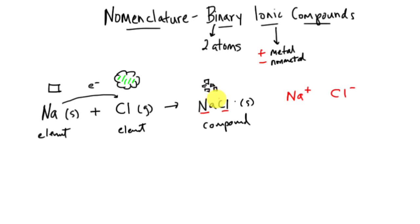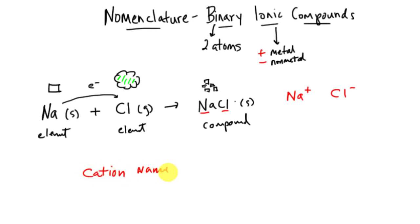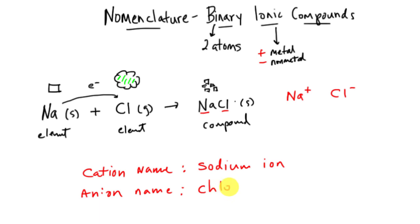Even though we don't write the charges, you have to keep in mind that whenever we have an ionic compound with a metal and a nonmetal, one is positive and one is negative. For the cation, we just call it what it is — sodium. For the anion, we change the ending: the anion gets the '-ide' ending, so chlorine becomes chloride.